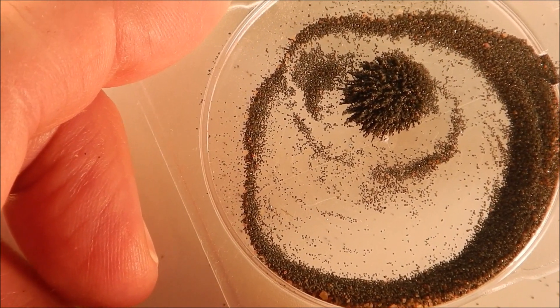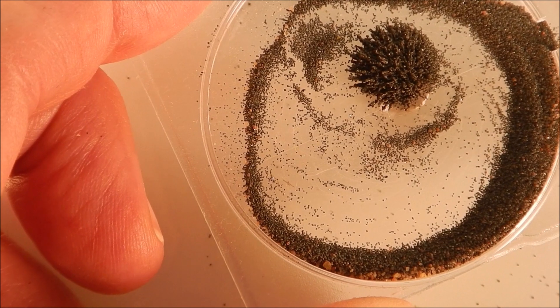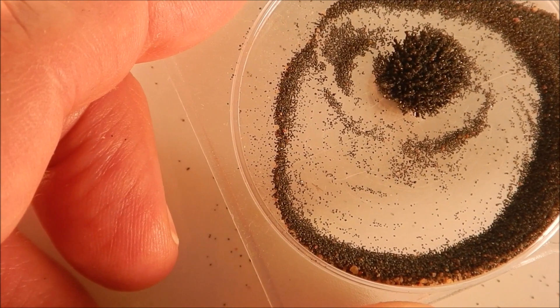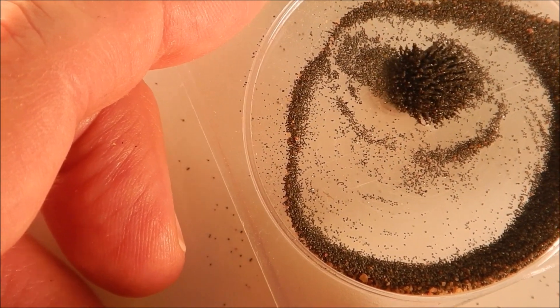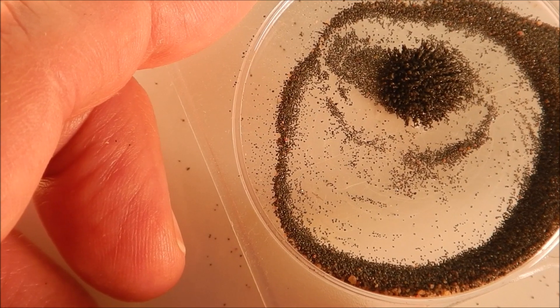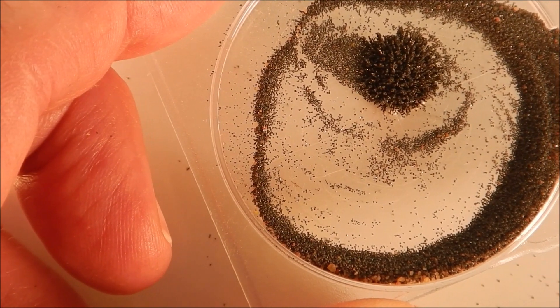If you've got a crucible that can take high temperatures, 2300 degrees Fahrenheit, you can actually smelt this and you should get an iron button at the bottom of your crucible at some point.